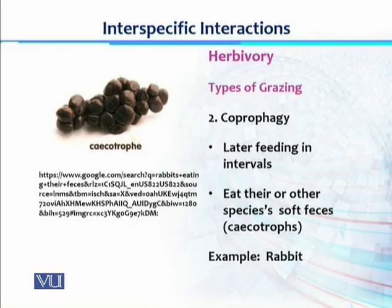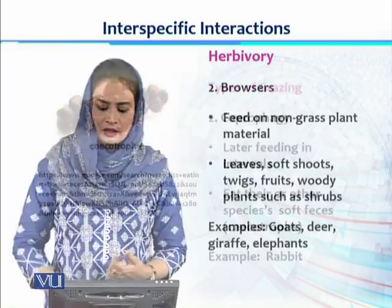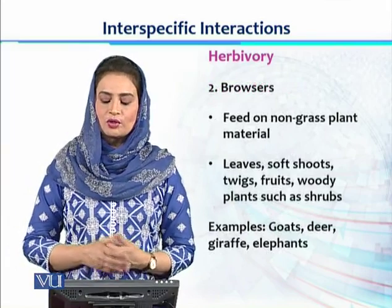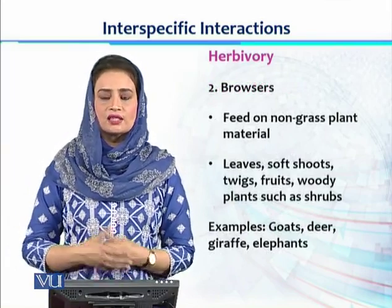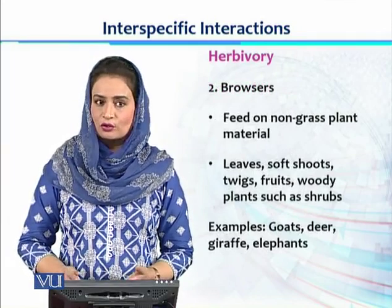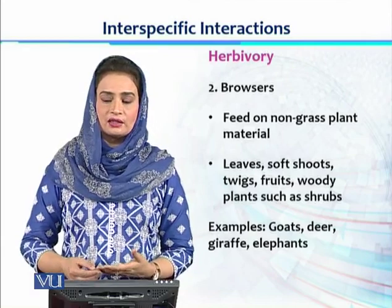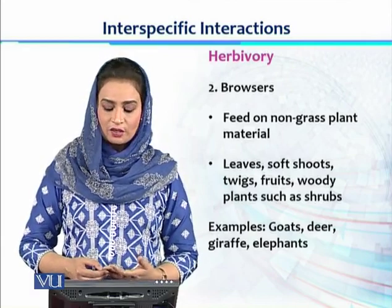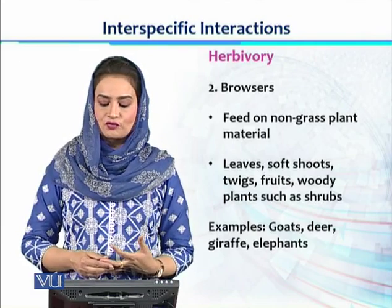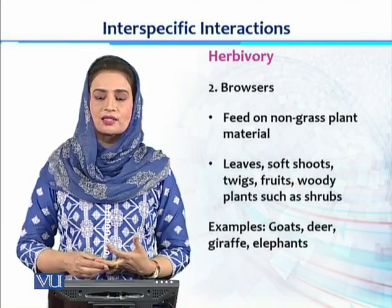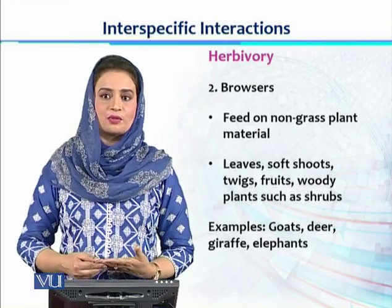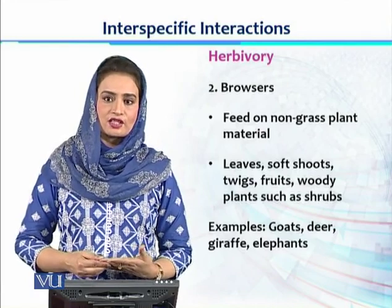After grazers, the second category is browsers. Browsers, as the name suggests, search for their food instead of continuously grazing. They feed on non-grass plant materials — for example, leaves, soft shoots, twigs, fruits, and woody plants such as shrubs. These animals browse and find these plant materials and utilize them as food.